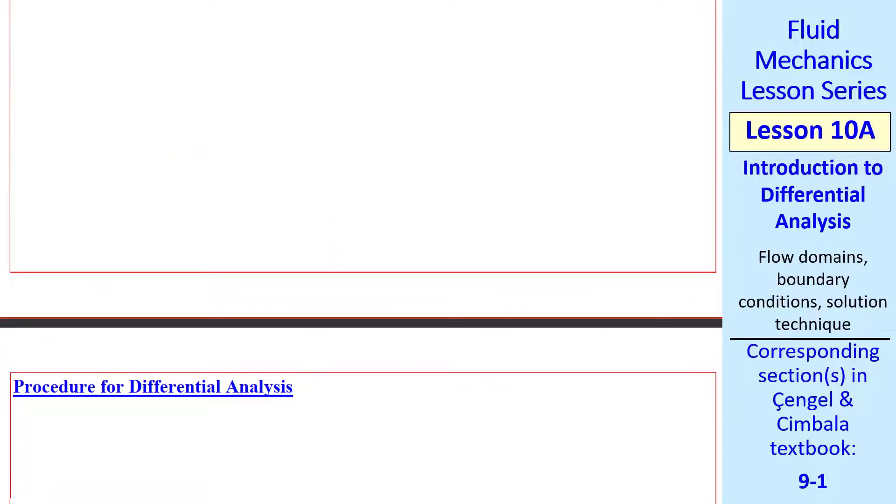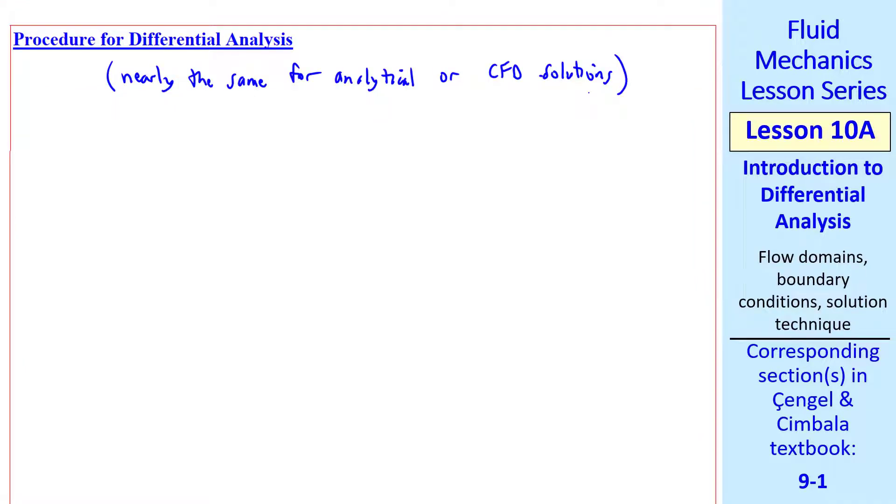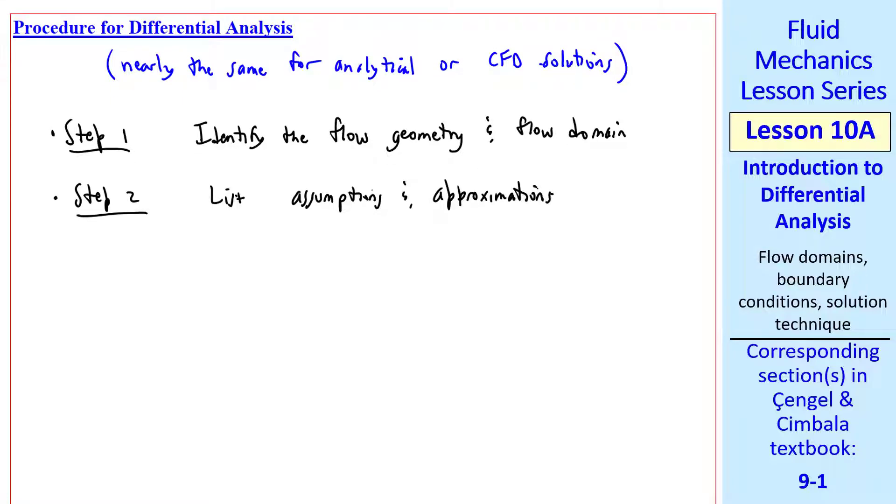Now let's talk about the procedure for differential analysis. The procedure itself is nearly the same for analytical or CFD solutions. And I'll show you a step-by-step procedure. Step 1, identify the flow geometry and the flow domain. Step 2, list assumptions and approximations. From now on I'll abbreviate that A and A. And boundary conditions, which I'll abbreviate BCs. Step 3, list all appropriate differential equations and the unknowns in the problem.